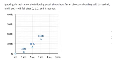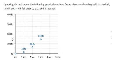Ignoring air resistance, the following graph shows how far an object — a bowling ball, basketball, anvil, etc. — will fall after 0, 1, 2, and 3 seconds. In this lesson we're dealing with projectile motion. When we look at the graph, we can see that at 0 seconds the distance traveled is 0 feet, at 1 second it's 16 feet, and at 2 seconds it's 64 feet, so we can see that this is increasing. The x-axis represents time elapsed since the object was dropped, and the y-axis represents the distance from the point where we dropped the object.